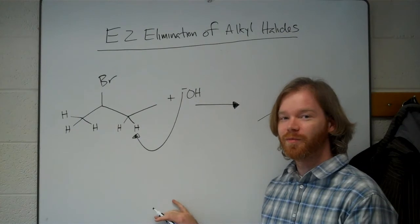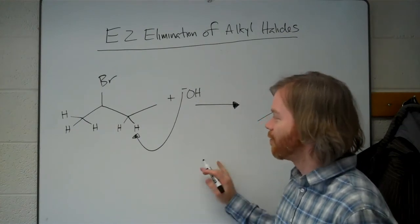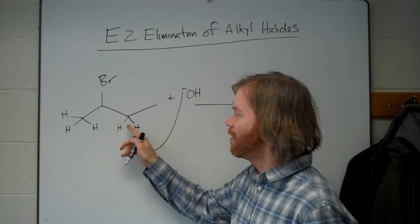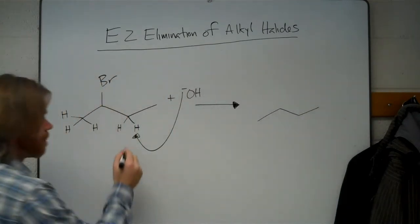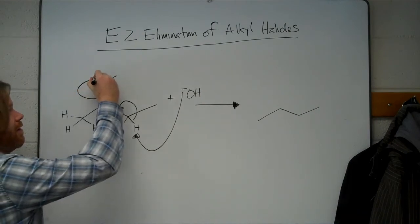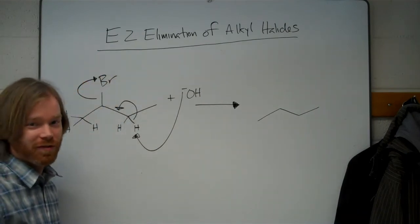And it's always going to give you the more substituted alkene, which we'll see in the product. So it removes this hydrogen, the electrons stay and form a double bond, kicking off the leaving group, which is the bromide.